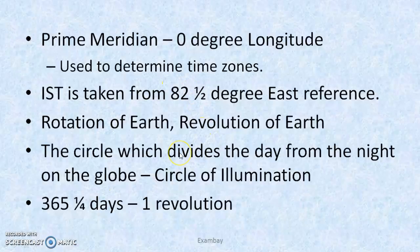The Earth moves in two ways: rotation and revolution. Rotation is responsible for day and night. Revolution causes the change of seasons and completes one year. The circle which divides day from night on the globe is called the circle of illumination. One revolution takes 365 and 1/4 days to complete. We discard the 1/4 day, which is why every 4 years we have a leap year with one extra day.